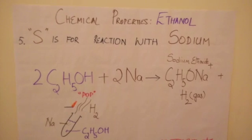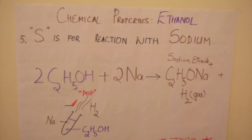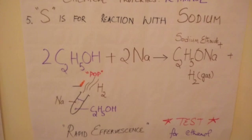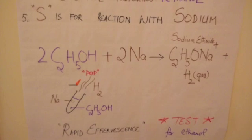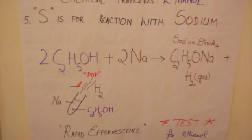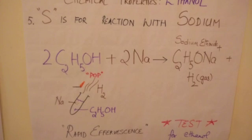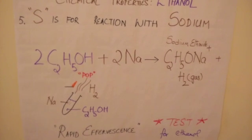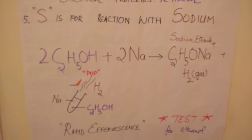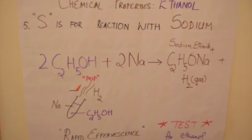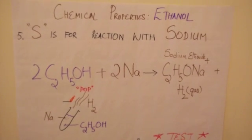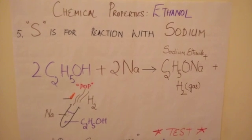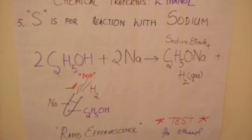The fifth and final reaction: S is for the reaction with sodium. You add sodium to ethanol in a test tube and observe rapid effervescence — like putting an antacid in water. The gas released is colorless and odorless. To confirm it's hydrogen, take a burning splinter to it and you should hear a pop sound. That's a test for ethanol. The reaction: two molecules of ethanol plus two sodium atoms give sodium ethoxide (C2H5ONa+) and hydrogen gas.